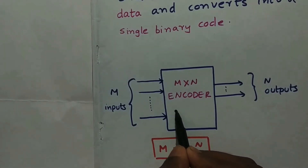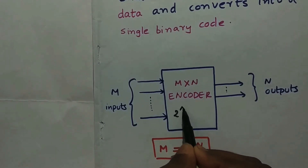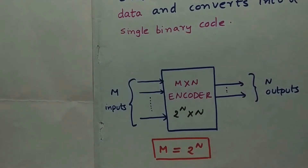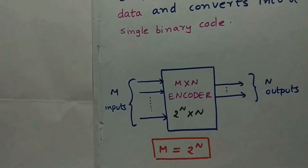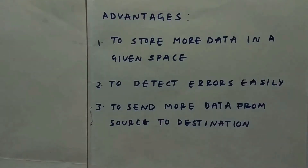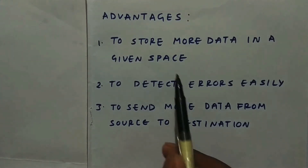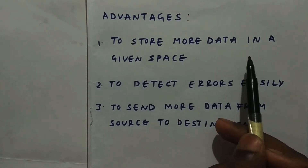This can be written as a 2^n × n encoder. So if n equals 2, then it is a 4×2 encoder. Now let's look at the advantages we get from an encoder. The basic advantage is that we can store more data in a given space.